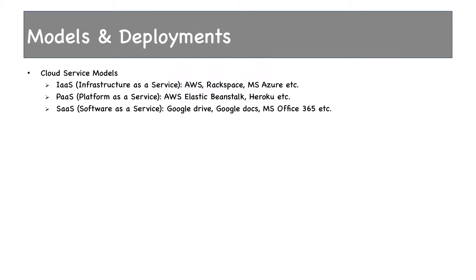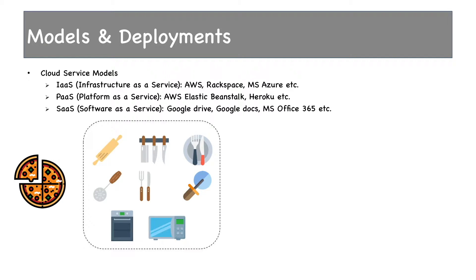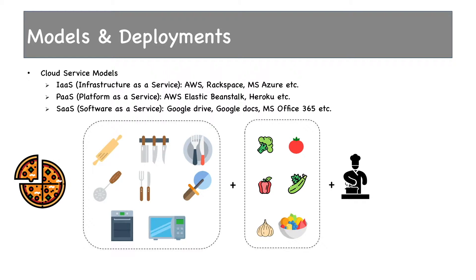Before going technical, let me describe this using a relatable example. Suppose you want to eat pizza. First option: go to a restaurant, order a pizza, eat and pay for it — you are using food as a service. Second option: cook it yourself. To cook pizza you need multiple things — kitchen utensils, vegetables — and then you cook and get your final product. The kitchen utensils represent infrastructure, the vegetables represent platform, then there is cooking, and finally the product.